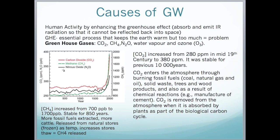We can see the same trend for methane, shown in green. The concentration of methane increased from about 700 parts per billion to 1,700 parts per billion, having been stable for the previous 850 years. The cause of this is that we are extracting more fossil fuels and also have more cattle. Some methane can also be released from natural frozen stores, and as temperature increases those stores start to melt, releasing more methane.